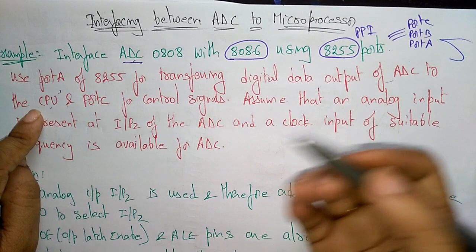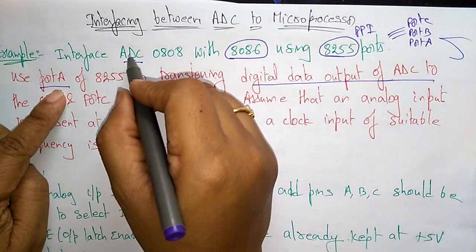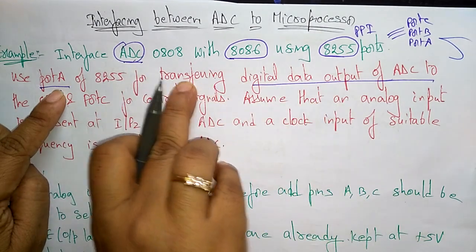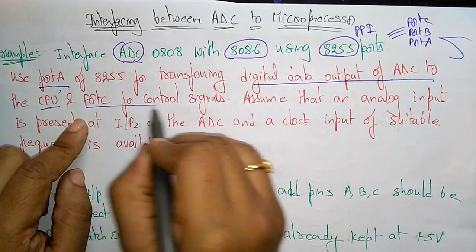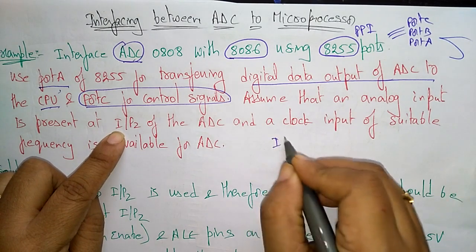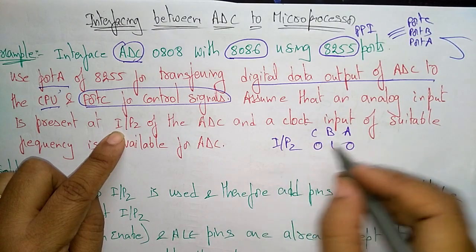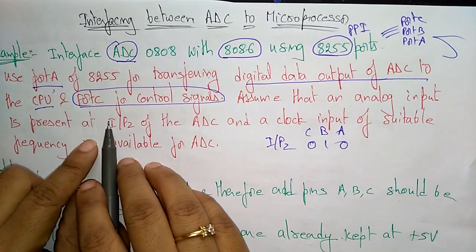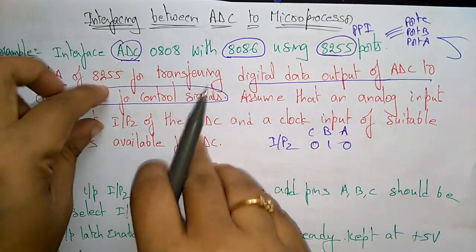The CPU can accept only digital information in the form of ones and zeros. Port A is used to transfer the digital data output of the ADC after converting the analog signal to digital. Port C is used for control signals. Assume that an analog input is present at IP2, so the address bits C, B, A will be 0 1 0. A clock input of suitable frequency is available.